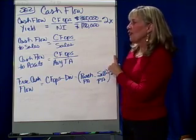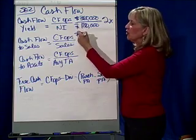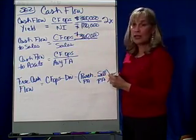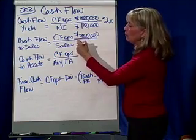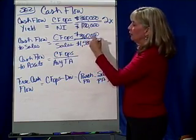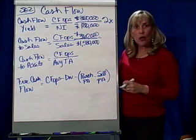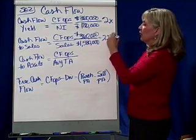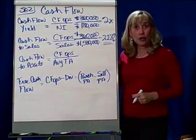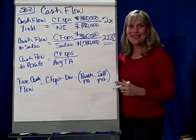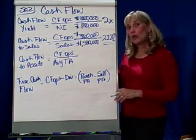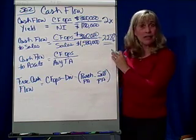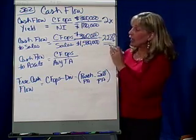Now, cash flow to sales. Again, cash flow from operations is $360,000 and sales in this instance is $1,580,000. So cash flow as a proportion of sales is 22.8%. Is that good? Well, it depends — on your expectations, what your competitors are doing, and what you did last year. I would need something to compare it to.